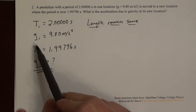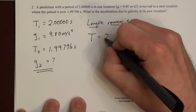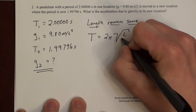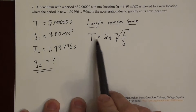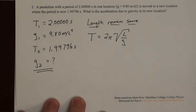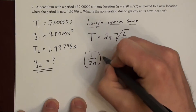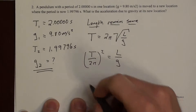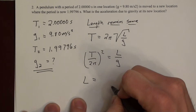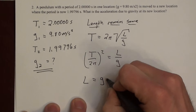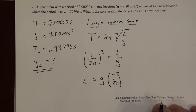To relate period, length, and g for a pendulum, the equation is T = 2π√(l/g). We can write this equation for each location, with l remaining the same. Solving for l: divide by 2π and square both sides to get (T/2π)² = l/g, so l = g × (T/2π)².